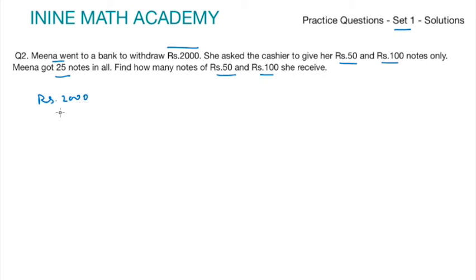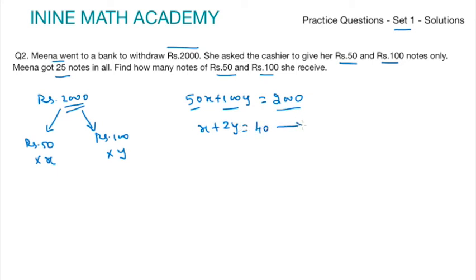Meena withdrew 2000 rupees only in terms of rupees 50 and rupees 100. There are some x notes of rupees 50 and some y notes of rupees 100. We can write 50x plus 100y equal to 2000, because rupees 50 into x plus rupees 100 into y is the total amount what she withdrew. Since 50 is a common factor in 50, 100, and 2000, we get x plus 2y equal to 40. Let us call this as equation 1.